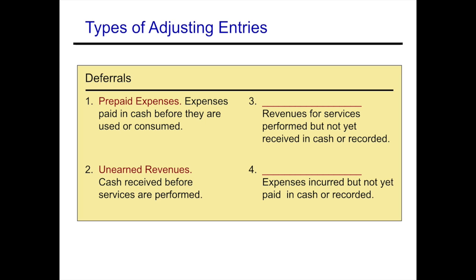In a later video we'll talk about accruals, which is the second type of adjusting entries. We have accrued revenues and accrued expenses. Accrued revenues is when you have revenues for services performed but not yet received in cash. Accrued expenses are expenses that are incurred but not yet paid in cash.